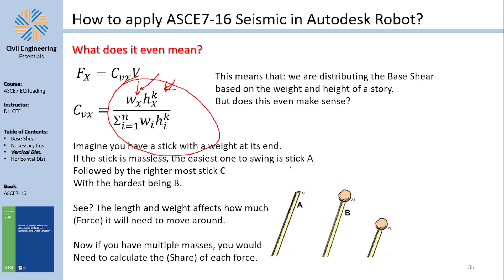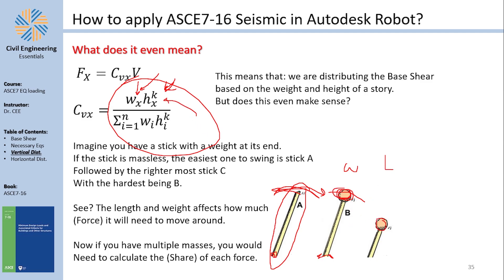Imagine you have a stick — stick A — and you take it in your hand and swing it back and forth. The force you must apply at the base is the force necessary to move the stick. Now if I attach a weight to the end, the force I need to apply becomes higher because the weight needs more force to move. So first, the force needed depends on the weight of the story. Second, it depends on the length of the stick — the story height. If I have the same weight on a shorter stick, it becomes easier to move. That's why the story height H appears in this equation — the height and weight together affect how much force is needed, and therefore how much base shear each story takes.